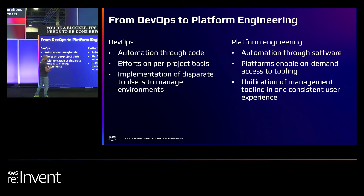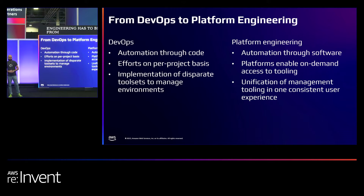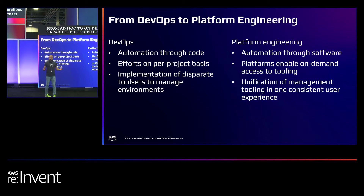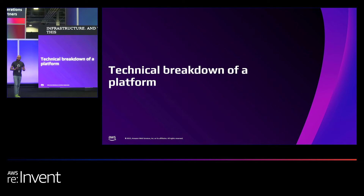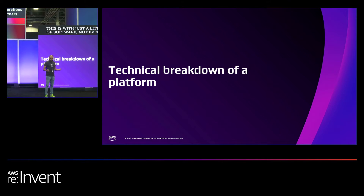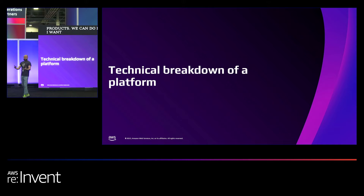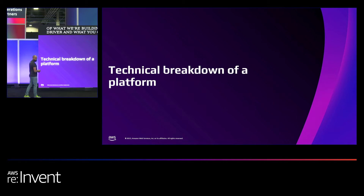The primary goal of platform engineering has to be switching from ad hoc to on-demand capabilities. It's to lower the cognitive overhead of the cloud and managing infrastructure, and we can do this with just a little bit of software — not even a lot of software. We built all this stuff before, we all manage products, we can do it. Today I want to talk you through some of what we're building at MassDriver and what you can implement yourselves to speed up operations and make it more effective.